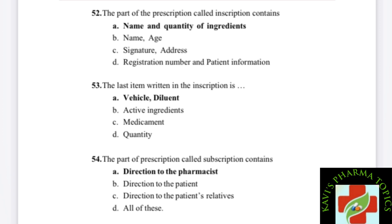The part of prescription called subscription — what does it contain? Option A: directions to the pharmacist. Option B: directions to the patient. Option C: directions to the patient's relatives. Option D: all of these. Subscription contains directions to the pharmacist — that is the right answer for subscription.